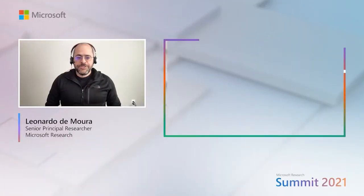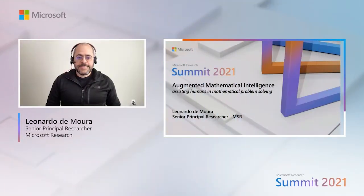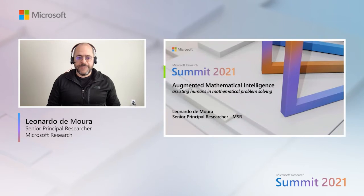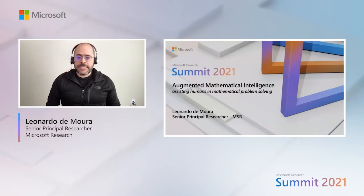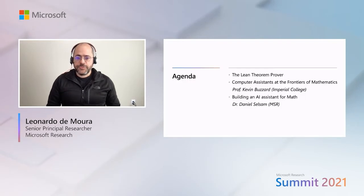Welcome, I'm Leo de Mora, a Senior Principal Researcher at Microsoft. Today I want to tell you about the Augmented Mathematical Intelligence Project, AMI for short. Our goal is to assist humans in mathematical problem solving. Our session today is divided in three parts. I'm going to start telling you about the Lean theorem prover, formal mathematics, and the AMI project.